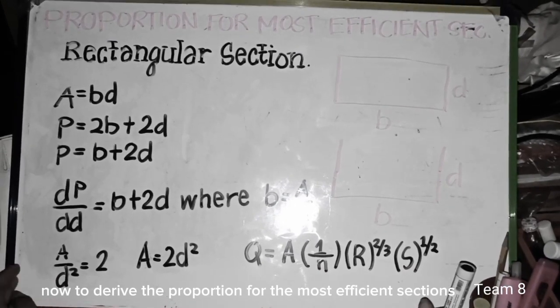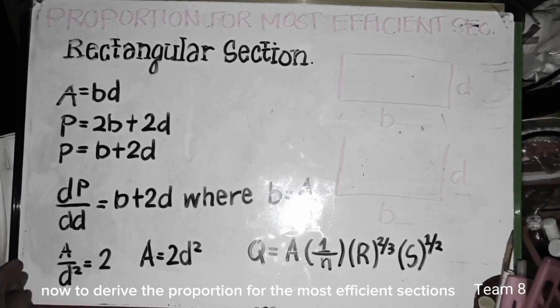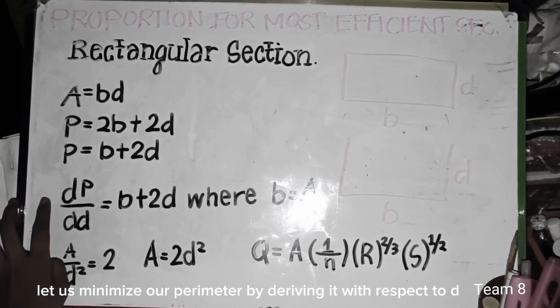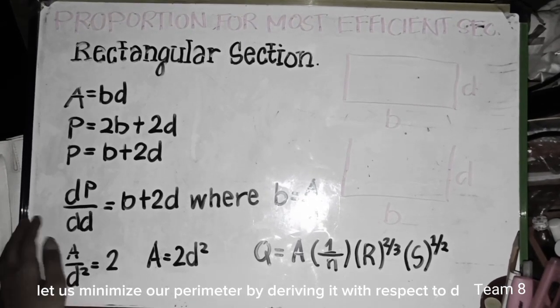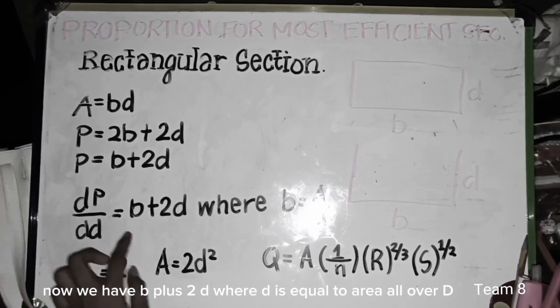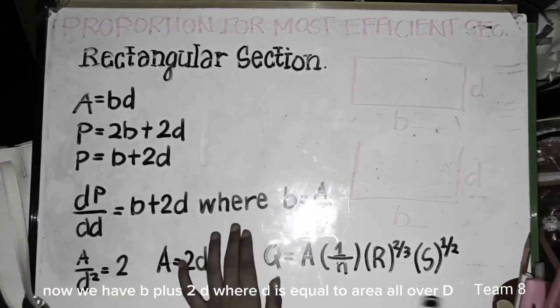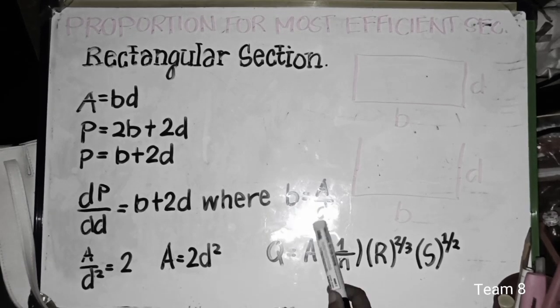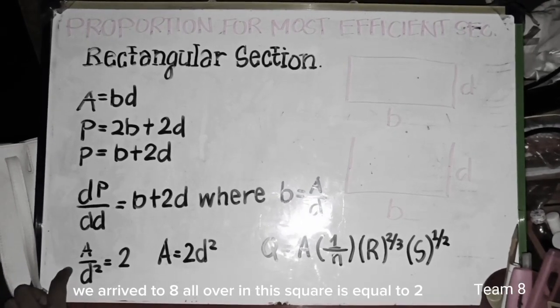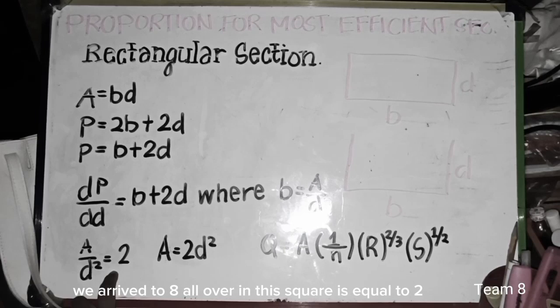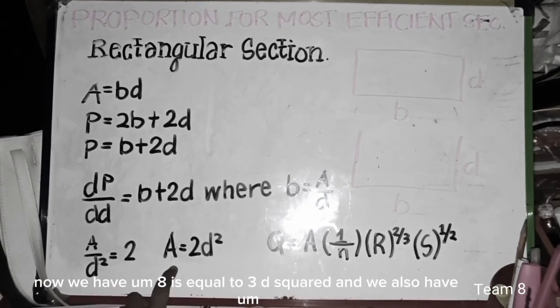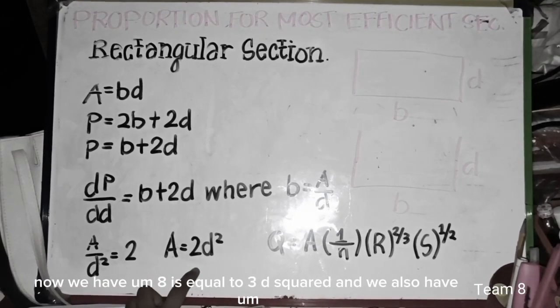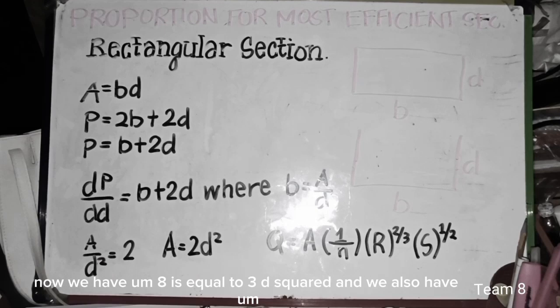Now, to derive the proportion for the most efficient sections, let us minimize our perimeter by deriving it with respect to D. Now, we have B plus 2D where B is equal to A over D. Now, since we derive it, we arrive to A all over D squared equals 2. Now, we have A is equals to 2D squared.